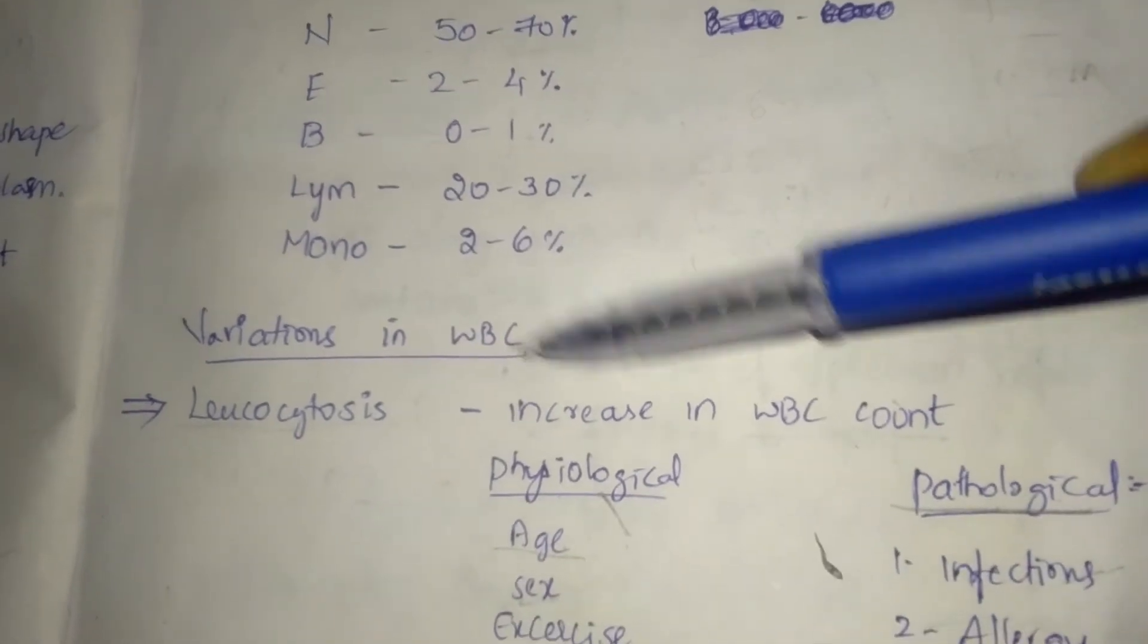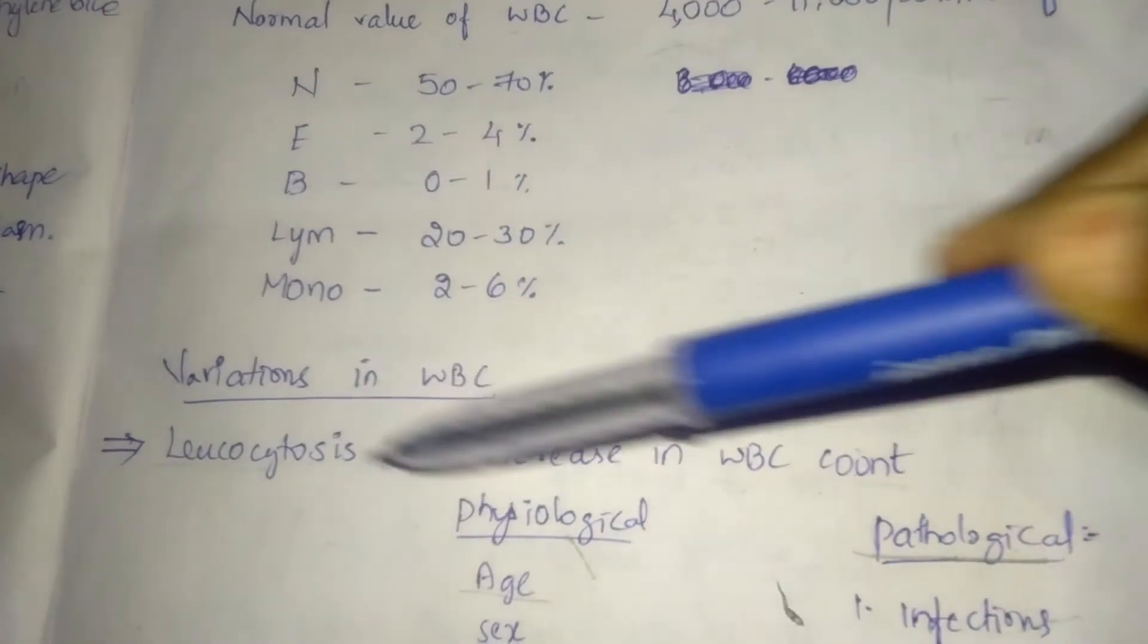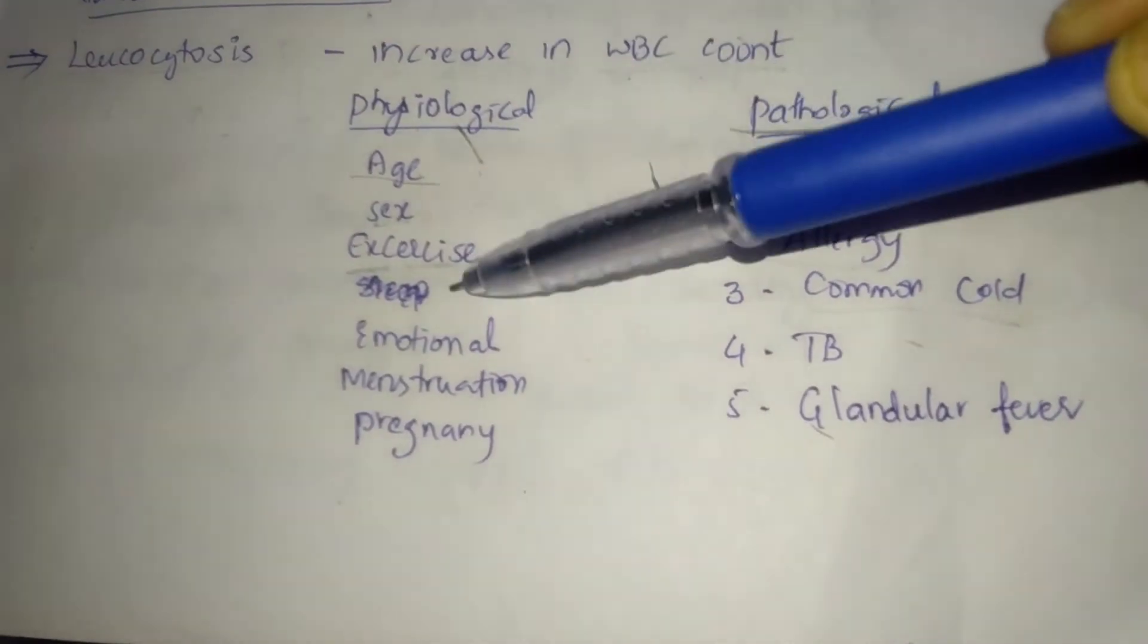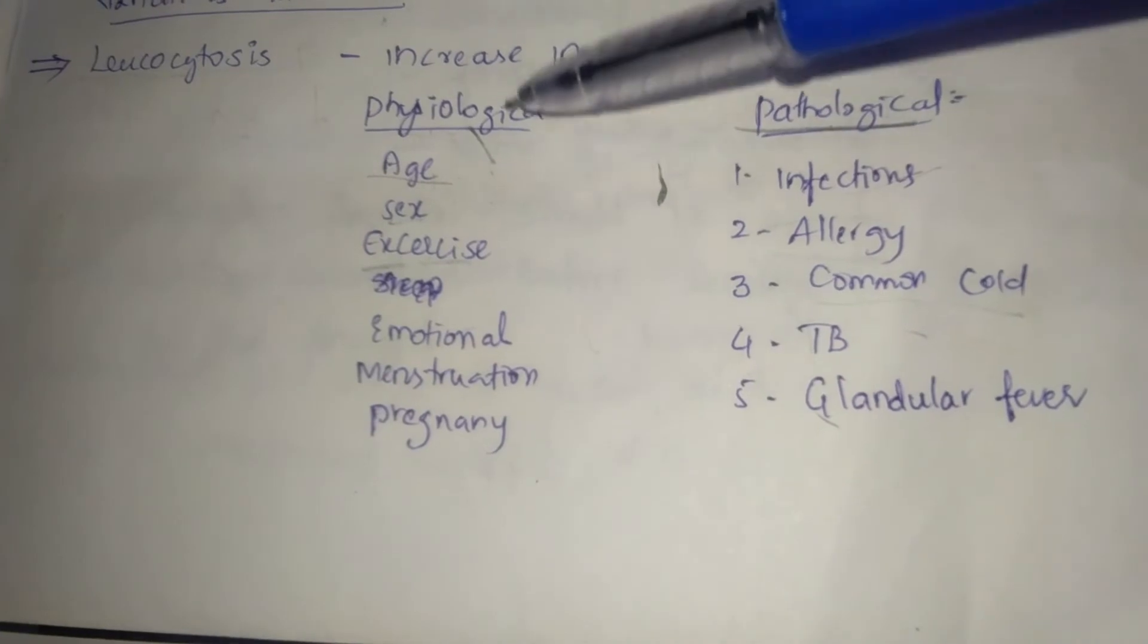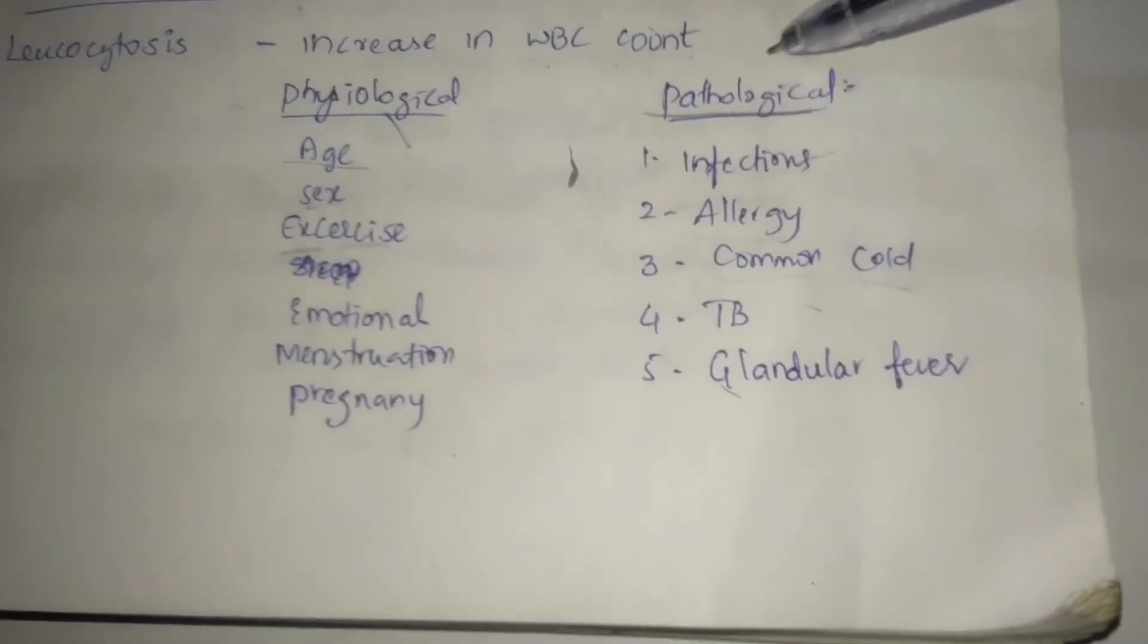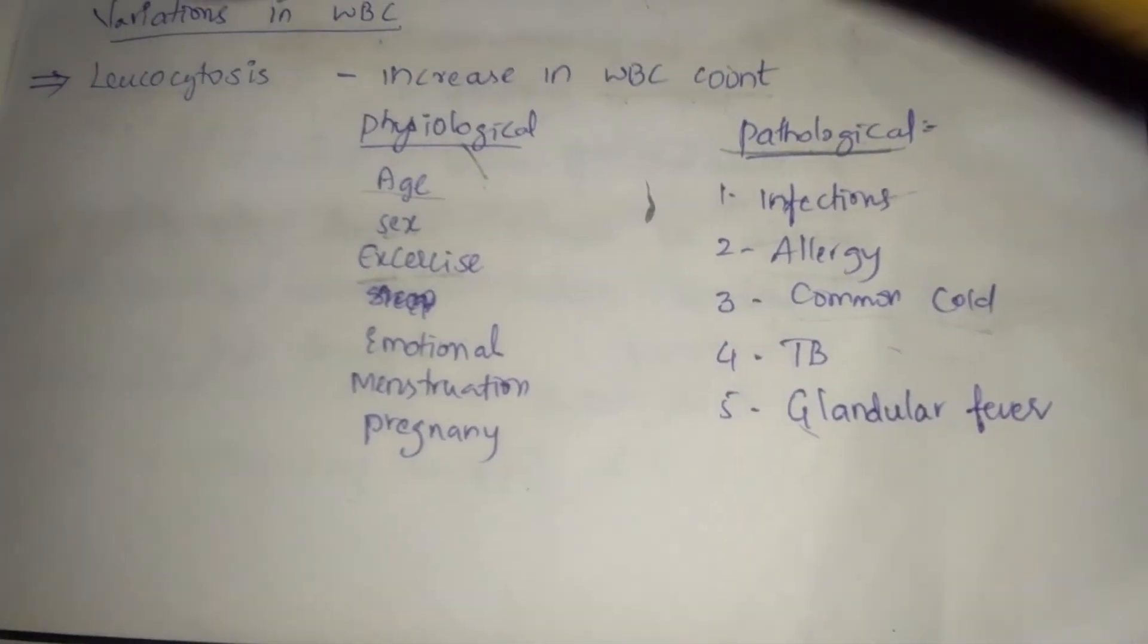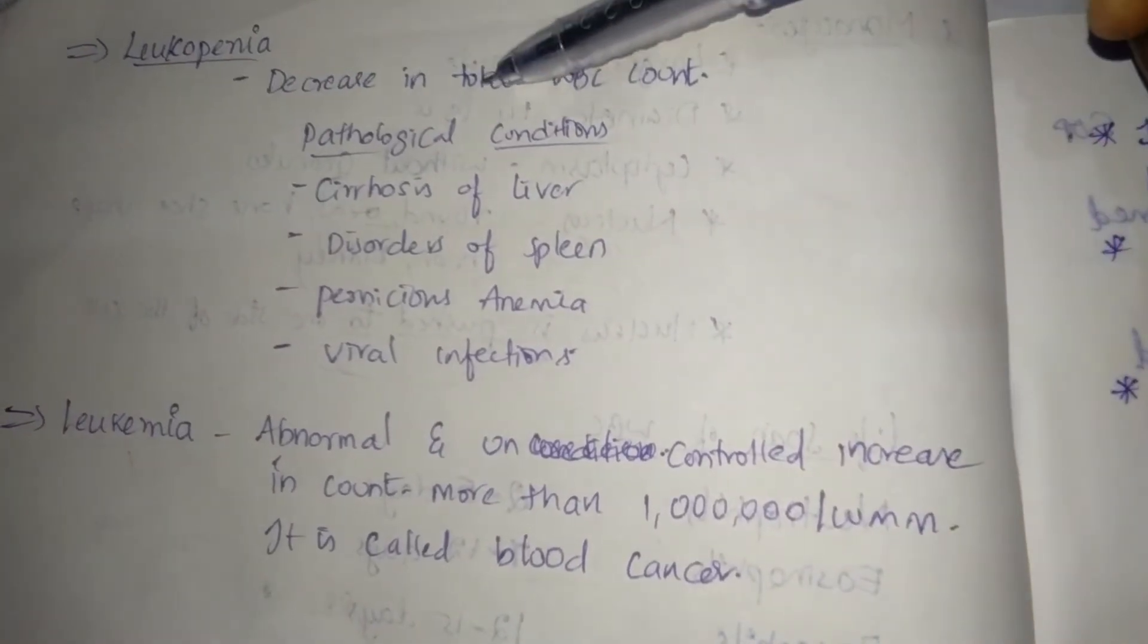Variations in WBCs: Leukocytosis - increase in WBC count. This increase can be due to physiological and pathological variations. Physiological: age, sex, exercise, emotional stress, menstruation, and pregnancy increase WBC count. Pathological variations: diseased conditions like infections, allergy, common cold, TB, glandular fever - WBC count increases, that is leukocytosis.